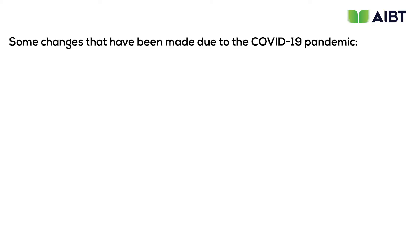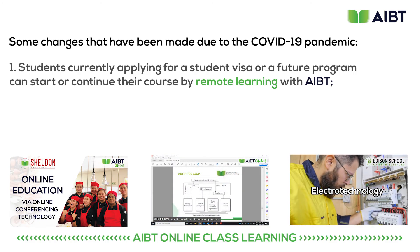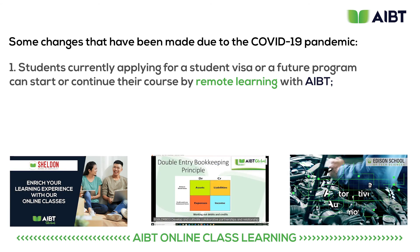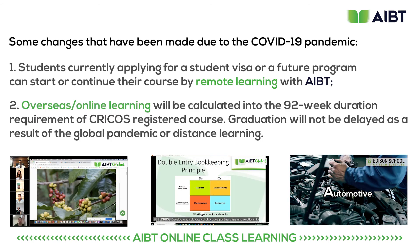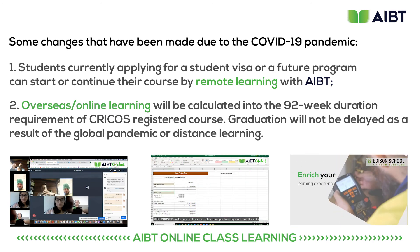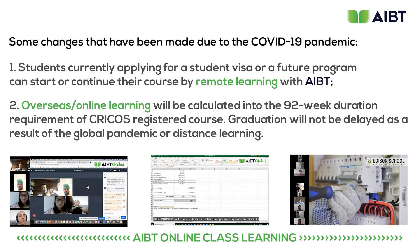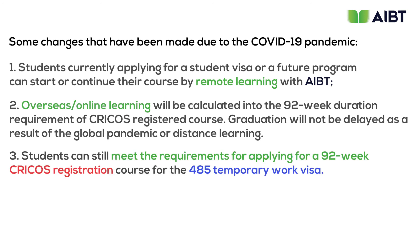Now let's go over some changes that have been made due to the COVID-19 global pandemic. Students currently applying for a student visa can start their course by remote learning with AIBT. Overseas and online training will be calculated into the 92-week duration requirement of CRICOS registered courses. Graduation will not be delayed as a result of distance learning, and students can still meet the requirement for a 92-week CRICOS registration course for the 485 temporary graduate work visa.